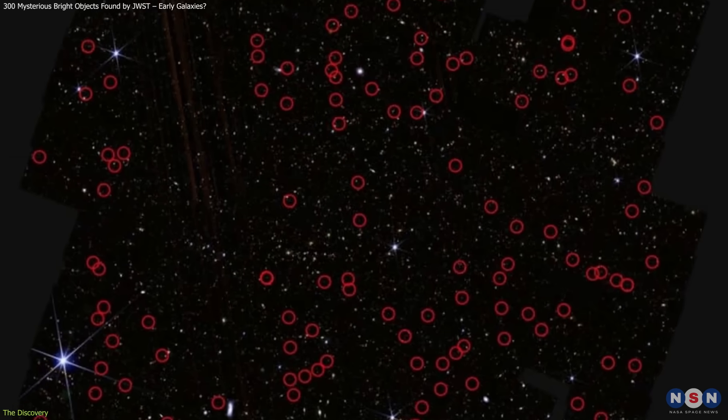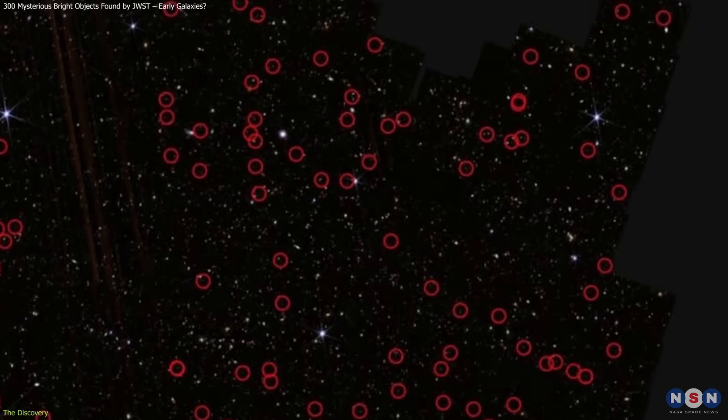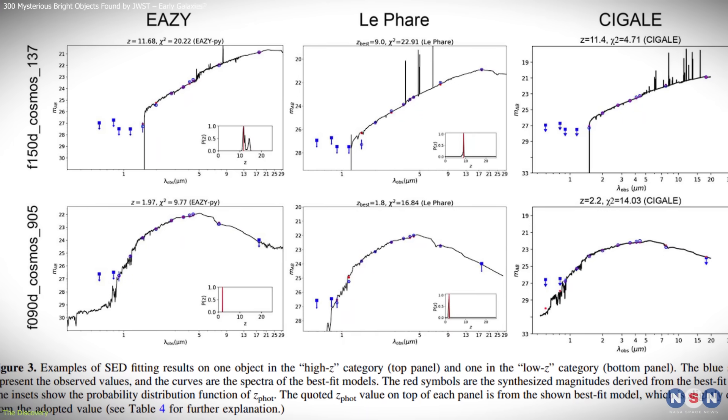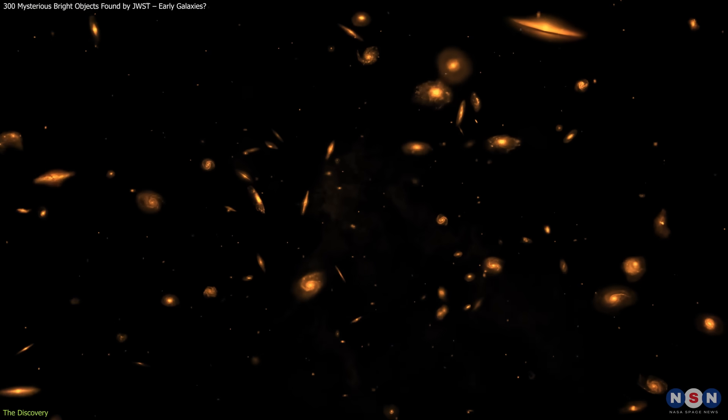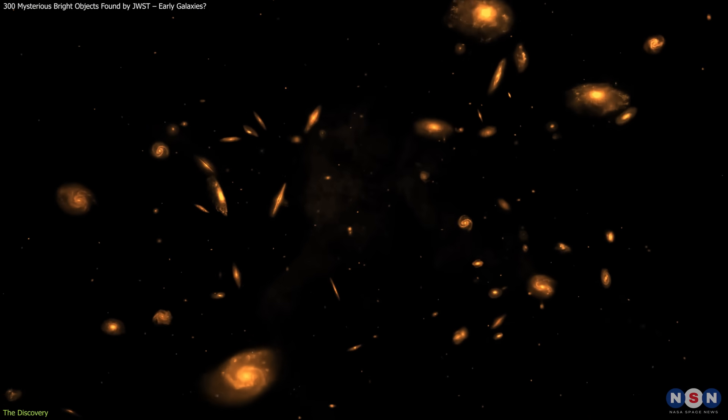Once potential objects were identified in the imaging data, the team used Spectral Energy Distribution to estimate their redshifts, stellar masses, and ages.